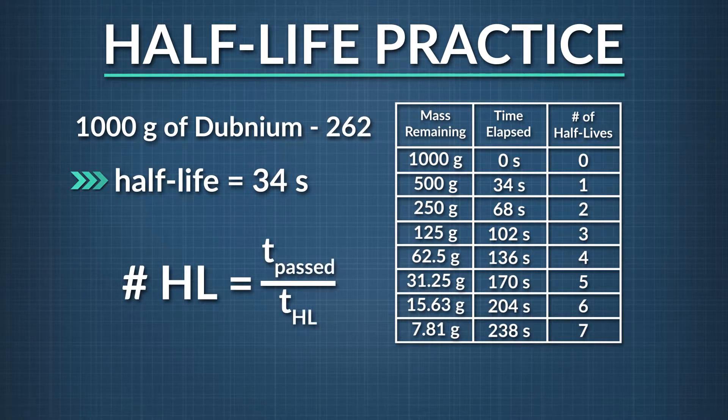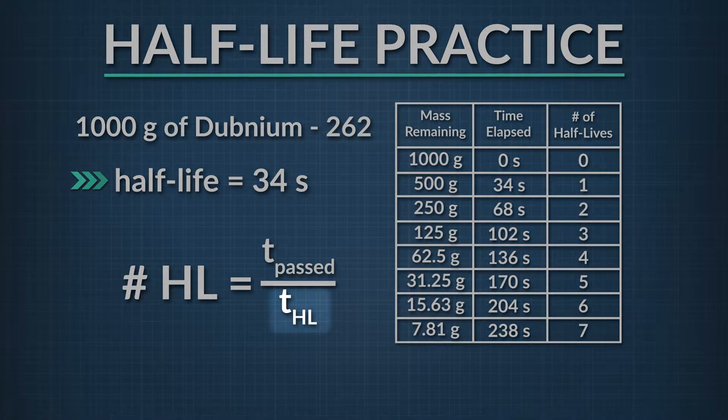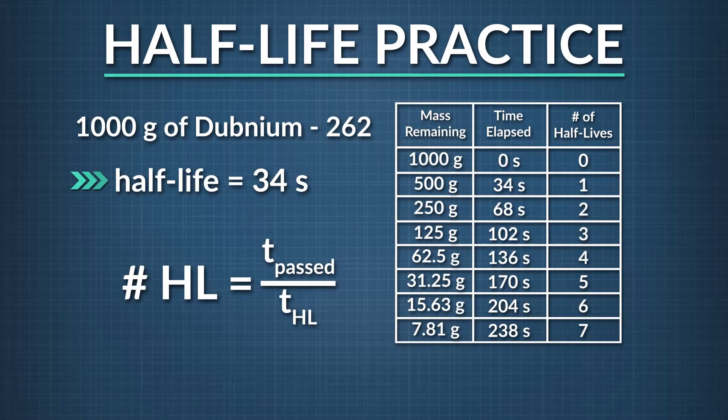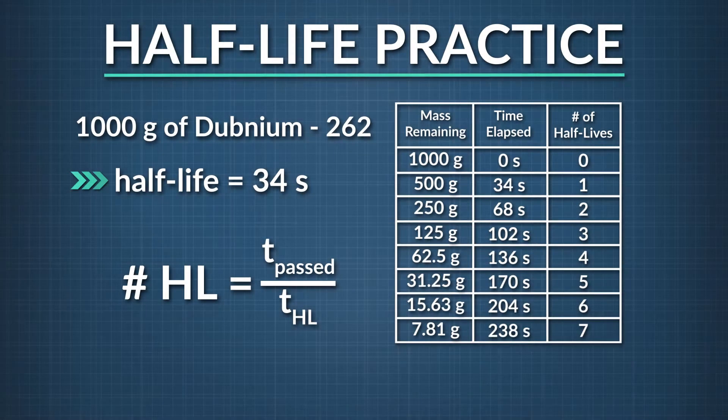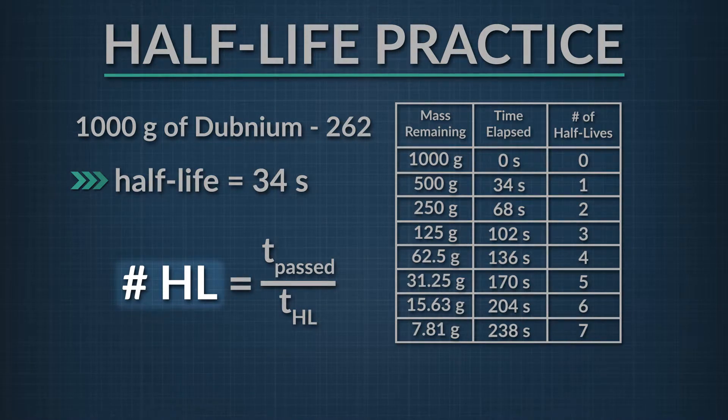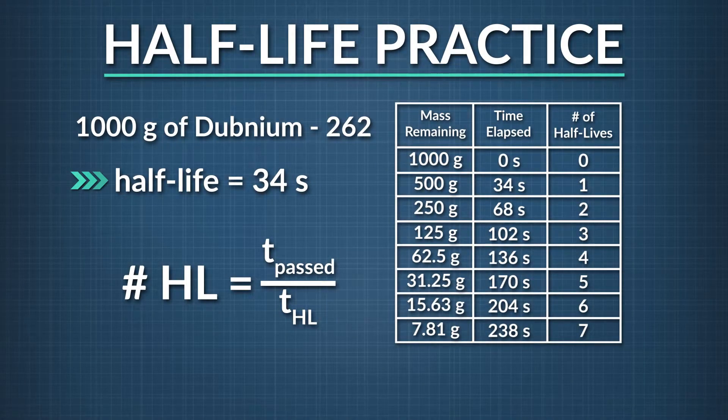One thing we saw earlier is there was an equation that could help us fill out a table like this. Remember that if we know how long a certain isotope's half-life is and how much total time has passed, we can figure out how many half-lives have happened. The number of half-lives elapsed equals the total time passed divided by the isotope's half-life. We can use this equation to figure out how much of an original isotope remains after some amount of time has passed.